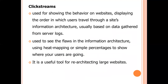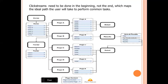Clickstreams are used for showing the behavior on websites, displaying the order in which a user travels through a site. Information architecture is usually based on data gathered from server logs. Clickstreams are used to see the flaws in information architecture, using heat mapping or simple percentages to show where your users are going. It is a useful tool for de-architecting large websites.